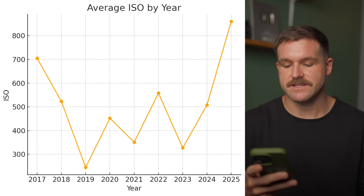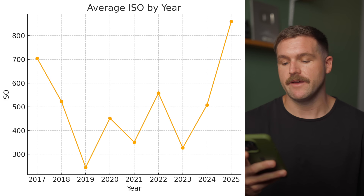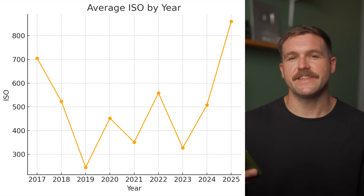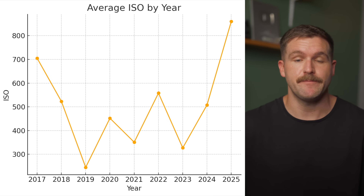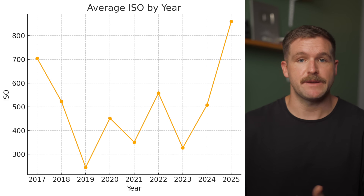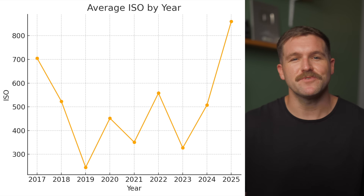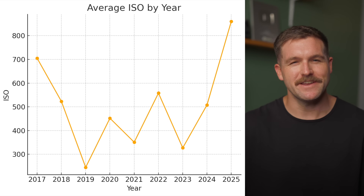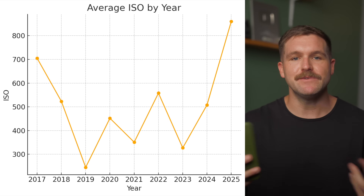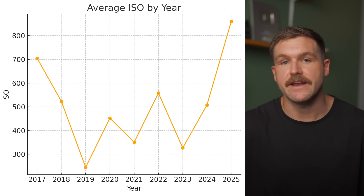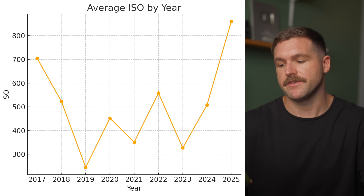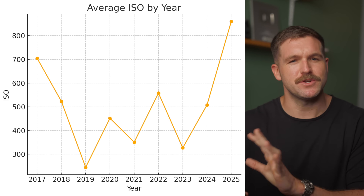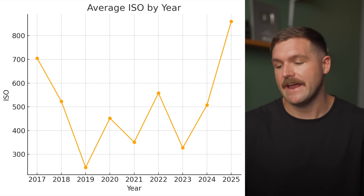Looking at ISO, it spikes quite a bit in 2025. I think that's because I'm a little lazier with ISO these days — the cameras are a lot better, and the Sony A1 is insane with its low-light performance. I also just don't really care as much about technical image quality. If the image tells the story I want it to tell, a little grain is not going to bother me. I've also been shooting a little more at night, which could explain that ISO spike.